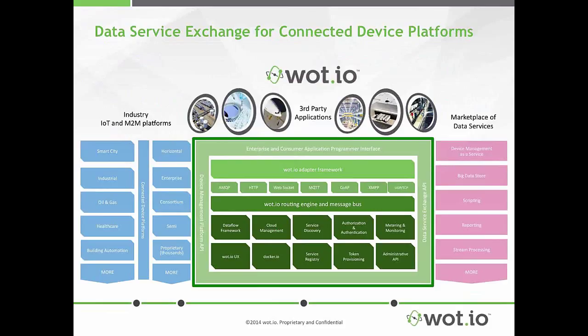This slide shows the Wadio architecture and how it fits into the ecosystem. The Wadio architecture is in the middle of the diagram, shown in green. On the left in blue are industry verticals that utilize IoT and produce vast amounts of data — industries such as smart cities, industrial, oil and gas, healthcare, and many others. On the right in pink are third-party data services. The Wadio architecture in the middle consists of the adapter framework, which provides an easy way to connect to device management platforms and supports multiple protocols including AMQP, HTTP, WebSockets, MQTT, and more. The routing and messaging bus handles the data flow between data services. Wadio also has additional services such as authorization and authentication, token provisioning, control dashboards, and more, which are needed to put together a complete IoT solution. In short, Wadio enables you to unlock the full value of your IoT data.